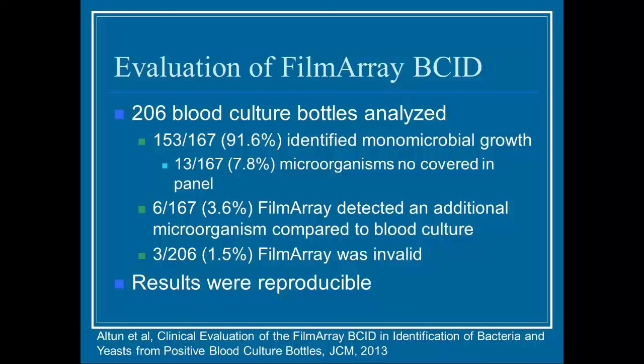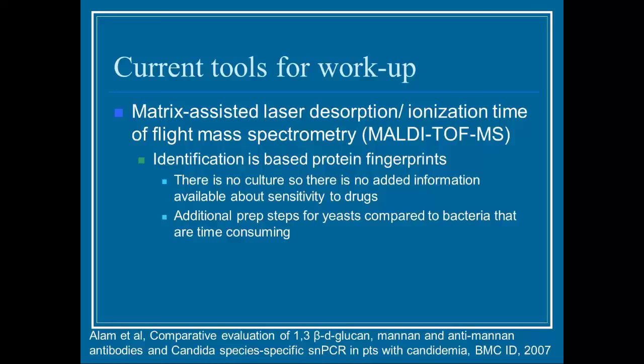There are other options, like MALDI-TOF, which is very popular in Europe and slower to adopt in the United States. It identifies protein fingerprints. Unfortunately, like multiplex PCR, you get an identification but no susceptibility data — you still have to culture it out to determine which antibiotics to use. For yeast, there are additional prep steps needed for MALDI-TOF in order to determine yeast identification.